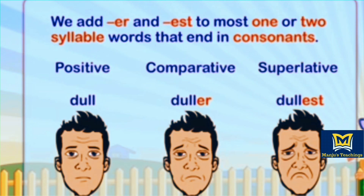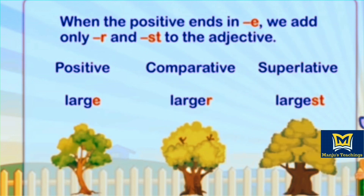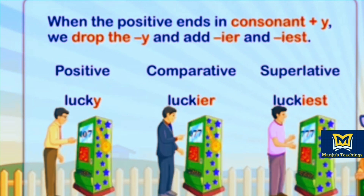We add ER and EST to most one or two syllable words that end in consonants. Example: dull, duller, dullest. When the positive ends in E, we add only R and EST — for example: large, larger, largest.